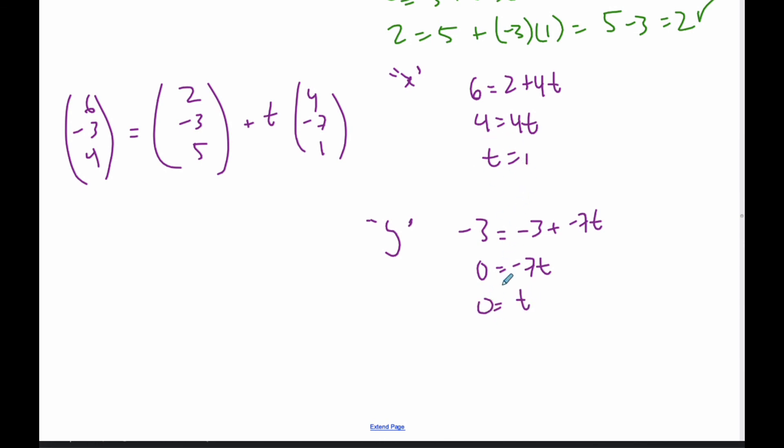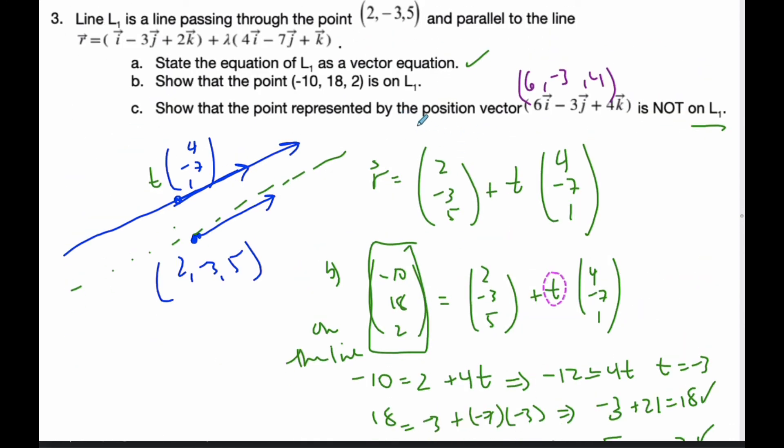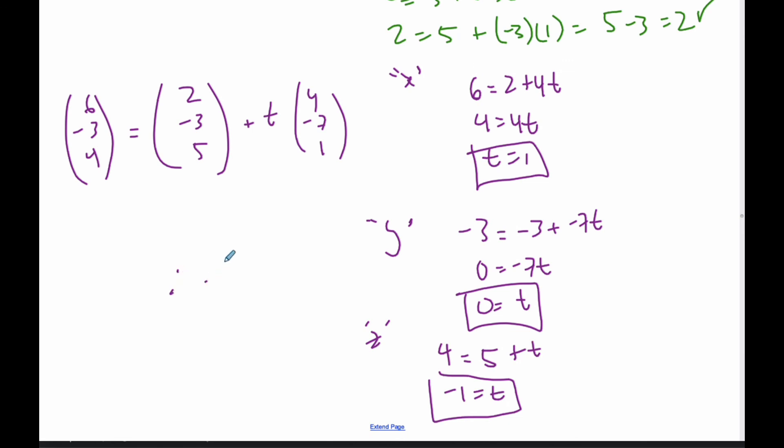I'll just do the last one. For z: 4 = 5 + t, so t = -1. I get three different t values for this scenario, which again re-emphasizes that it is not on the line. Therefore, not on L1.